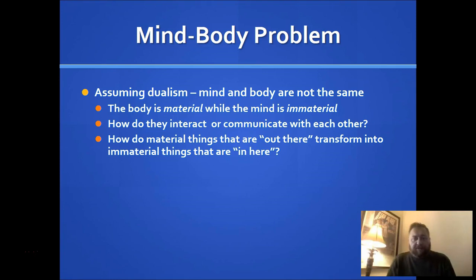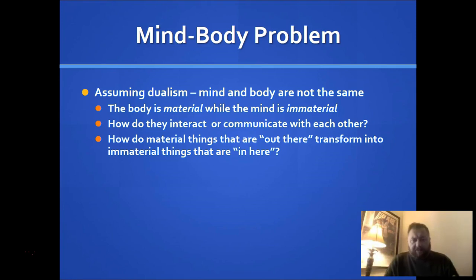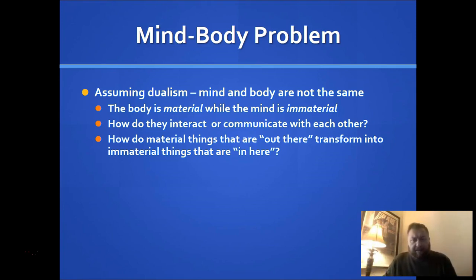There's also the other side of this problem. Once I reach out and grab the pen, I feel it in my hand — that physical sensation travels through sensory nerves, up the spine, and into the brain. But at some point it has to jump from the brain back into the mind, where it becomes my experience and awareness that I'm holding a pen. So the two-way street is: how does the mind control the body, and how does the body provide sensory information back to the mind? We'll look at examples in chapter four.